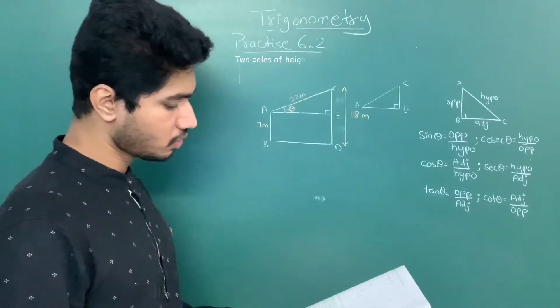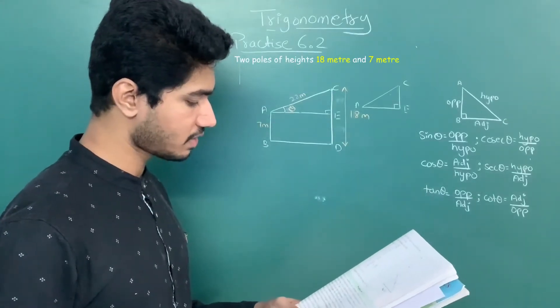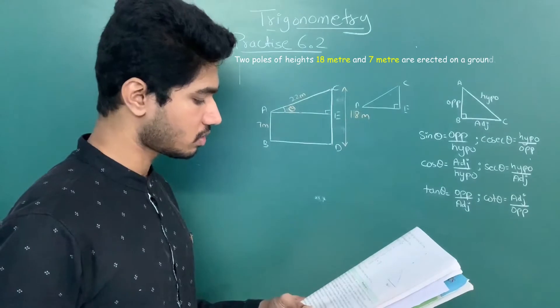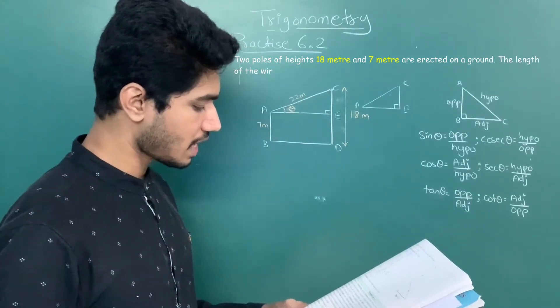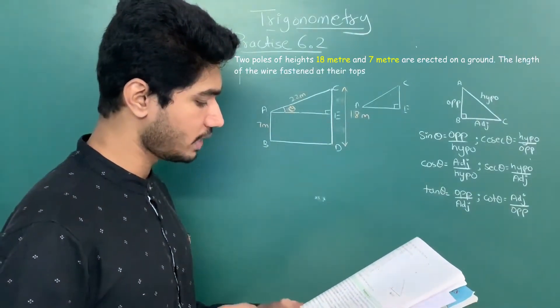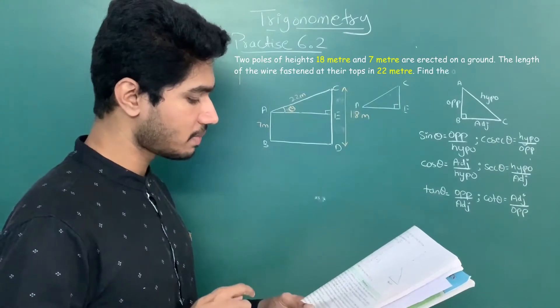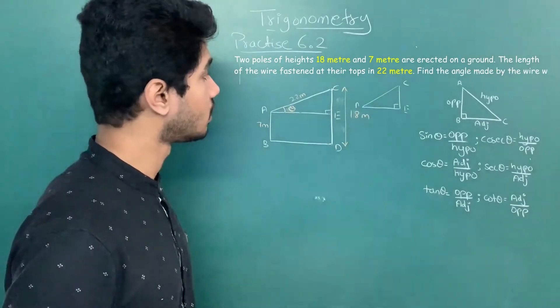Fourth question: two poles of height 18m and 7m are erected on a ground. The length of the wire fastened at their tops is 22m. Find the angle made by the wire with the horizontal.